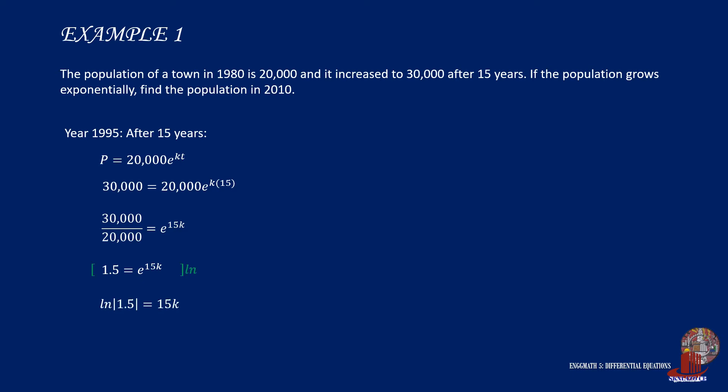Multiply the whole equation by ln to cancel out e to have ln of 1.5 is equal to 15k. Then divide ln of 1.5 by 15 to get k as 0.02703. So the working equation is completed as p equals 20,000 times e raised to 0.02703 times t.